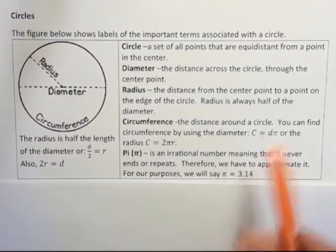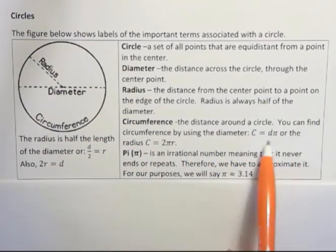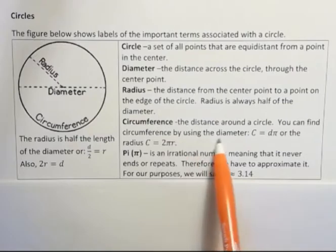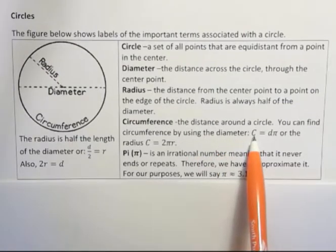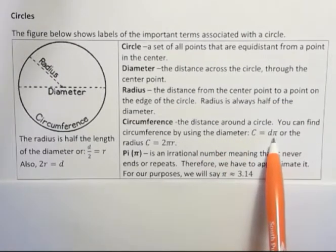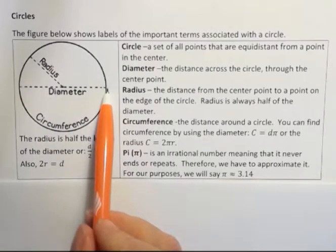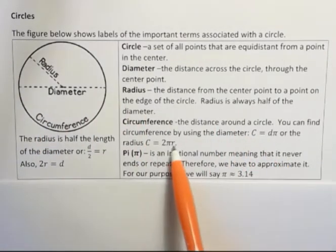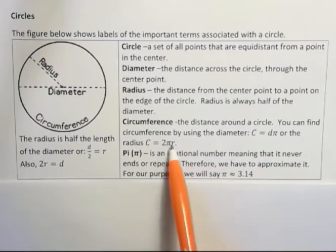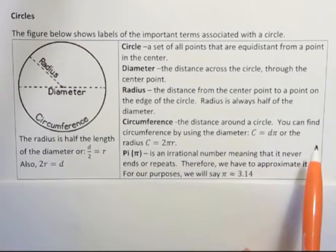When we deal with circles, you've heard pi before, because here's the formula for finding the circumference of a circle is diameter times pi. That is this diameter times pi or 2πr.